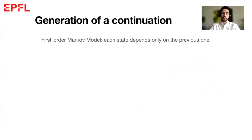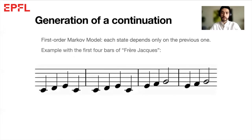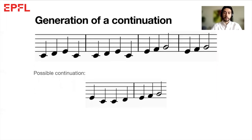Now coming to the generation part, we decided to follow a first-order Markov model, a statistical model where each state depends only on the previous state. Let's take the first four bars of Frère Jacques. If we were to generate a continuation from this prime, we would take the last note G and generate the next note using only that note. Without taking any of the other notes into account, we can then repeat the process with the newly created note. Here's an example of a possible continuation.